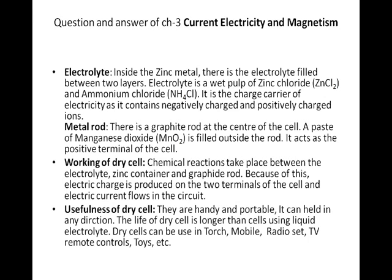Electrolyte: inside the zinc metal there is electrolyte filled between two layers. The electrolyte is a wet pulp of zinc chloride and ammonium chloride. It is the charge carrier of the electricity as it contains negatively and positively charged ions. Metal rod: there is a graphite rod at the center of the cell. A paste of manganese dioxide is filled outside the rod. It acts as the positive terminal of the cell.